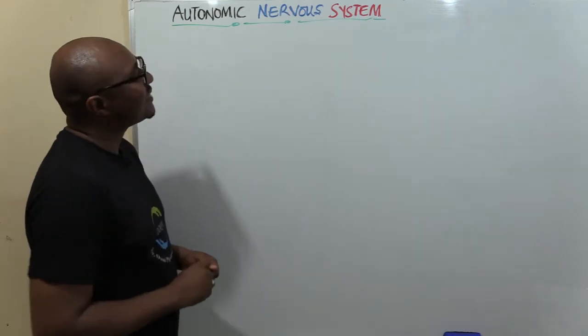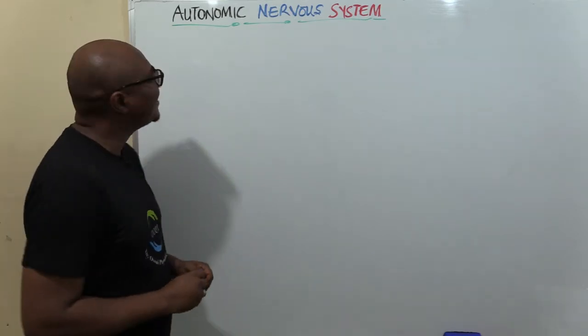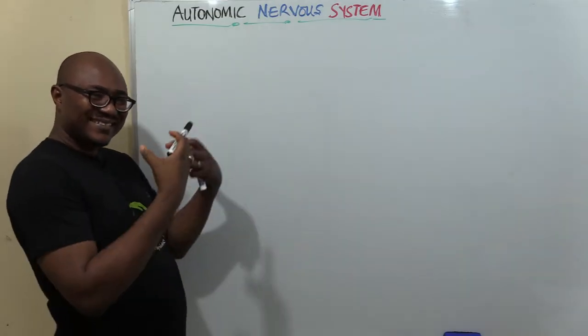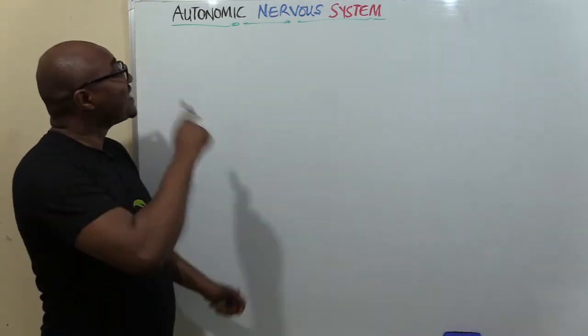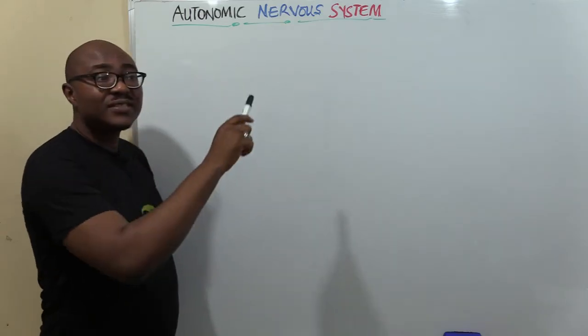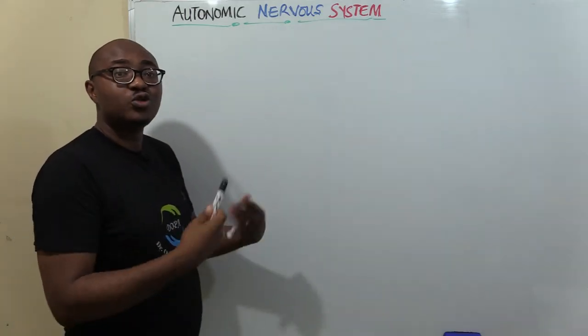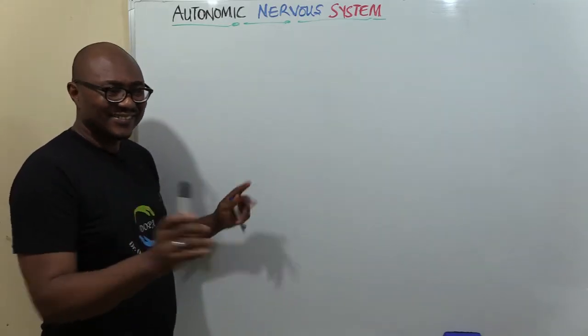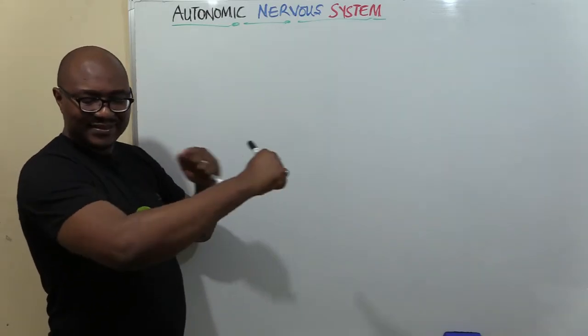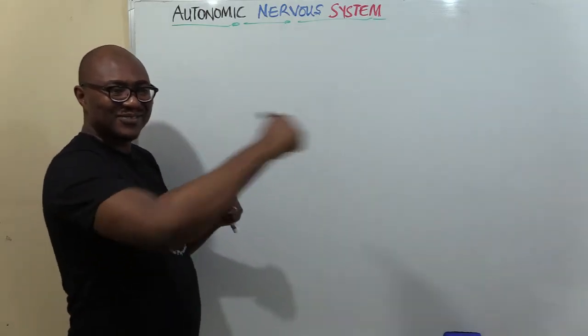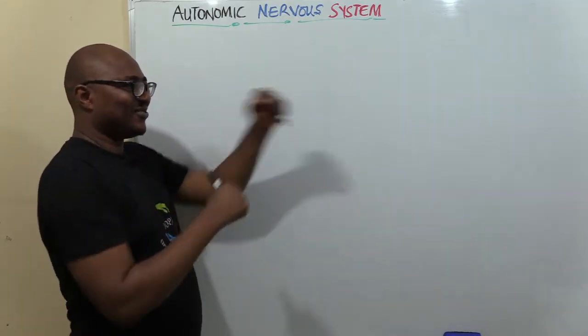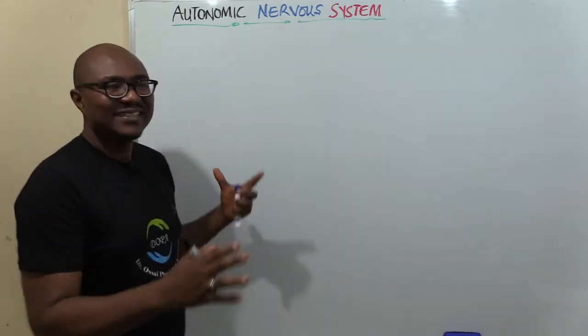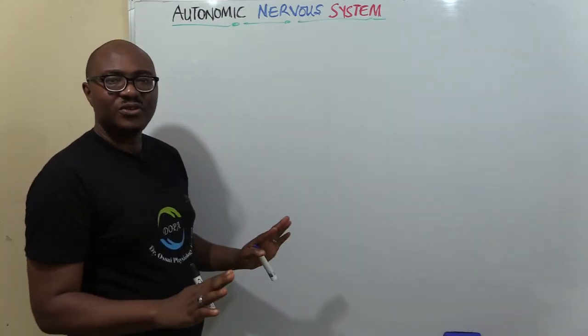This is Autonomic Nervous System we have for today. Auto means self. That means it's a nervous system that is automatic, that controls itself involuntary. Unlike the voluntary muscles that you use to move around, move your legs, move everything, you are in full control of that.